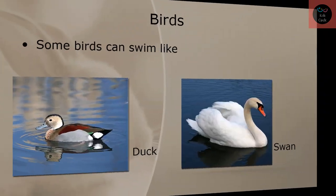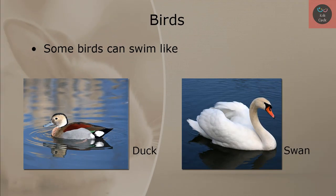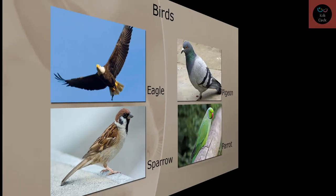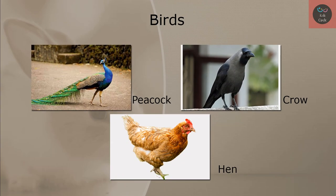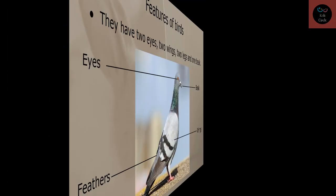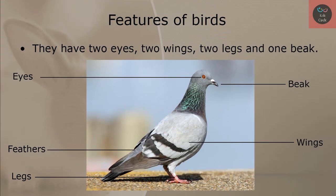Some birds can swim, like duck and swan. Eagle, pigeon, sparrow, parrot, peacock, crow, and hen are some of the birds. Features of birds: they have two wings, two legs, and one beak.